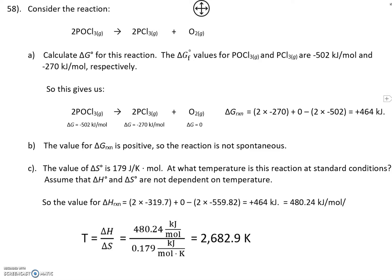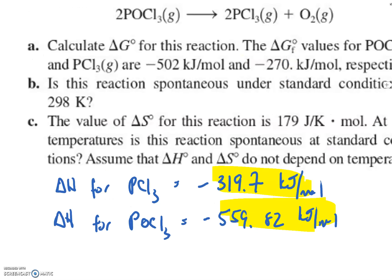So here are the values of delta G that the problem gave us. Plugged them right into the equation. I got a value of delta G of 464 joules. It's a positive number, so the reaction is not spontaneous. And here are the values of delta H and delta S, 179 joules, joules, joules, ladies and gentlemen, not kilojoules. Per Kelvin mole, and the values of delta H and delta S that we got from right here.